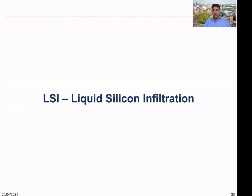Let's look at the second process we're going to discuss on manufacturing of ceramic matrix composites in this unit. That is the liquid silicon infiltration process. By the name of the process, you can understand the nature of the process. Liquid silicon is involved, and you want to infiltrate liquid silicon into the reinforcement.